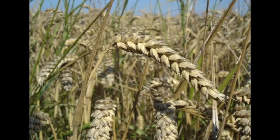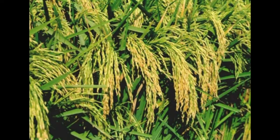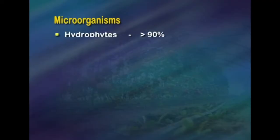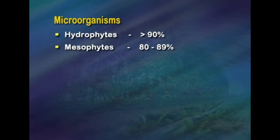Moisture content varies by crop: wheat has 8 to 10 percent, paddy has 20 to 24 percent, and maize and sorghum have 20 percent. Microorganisms are classified as hydrophytes at greater than 90 percent moisture, mesophytes at 80 to 89 percent, and xerophytes at less than 80 percent.